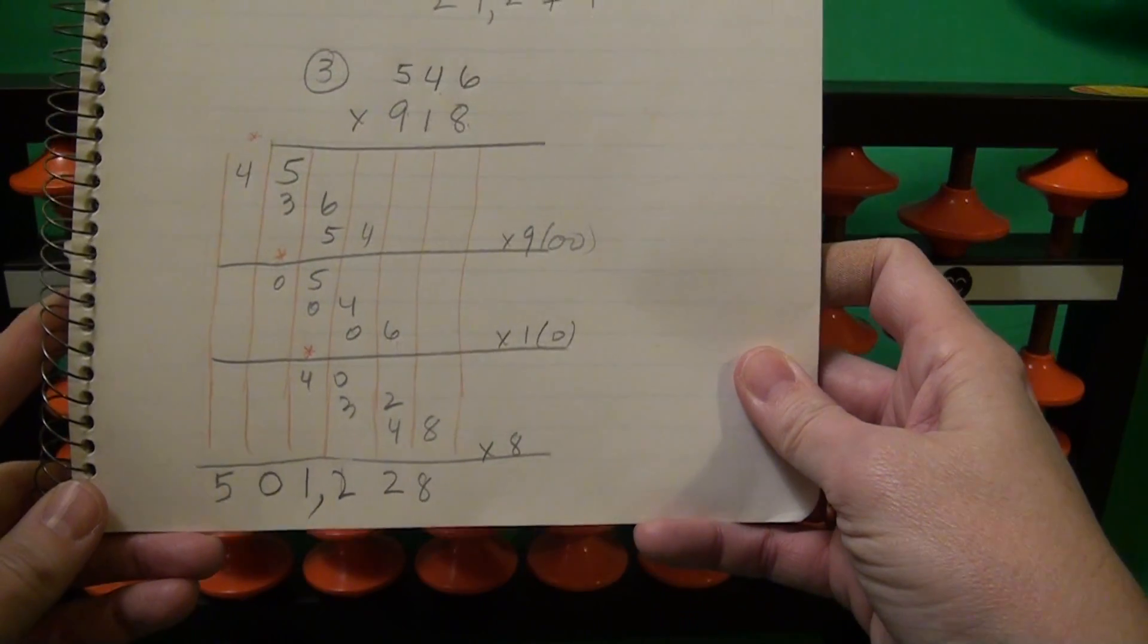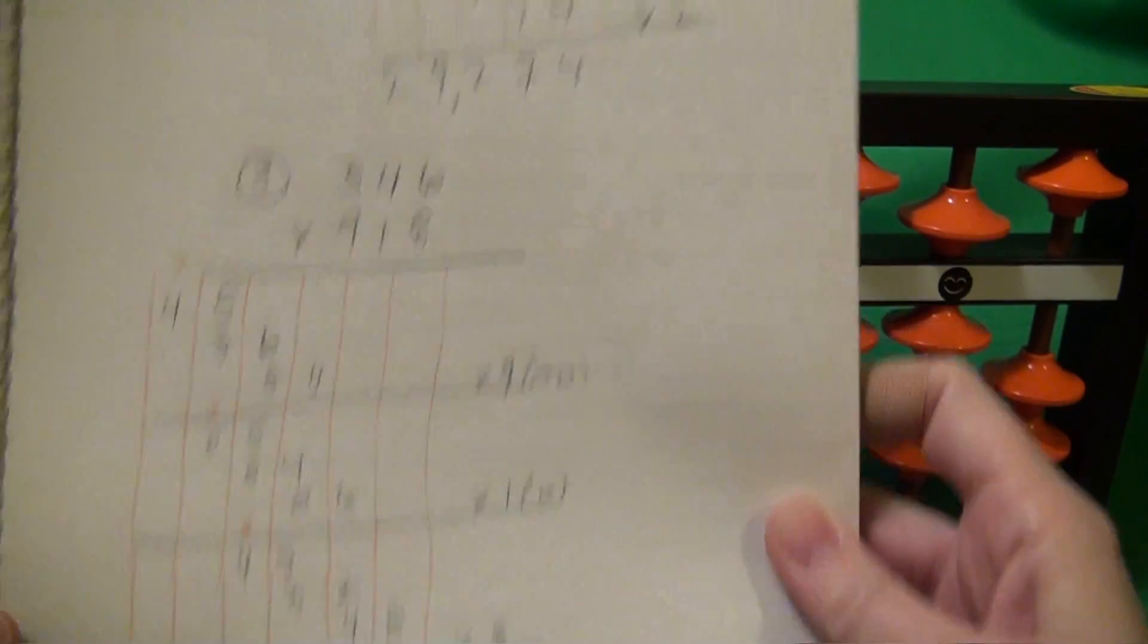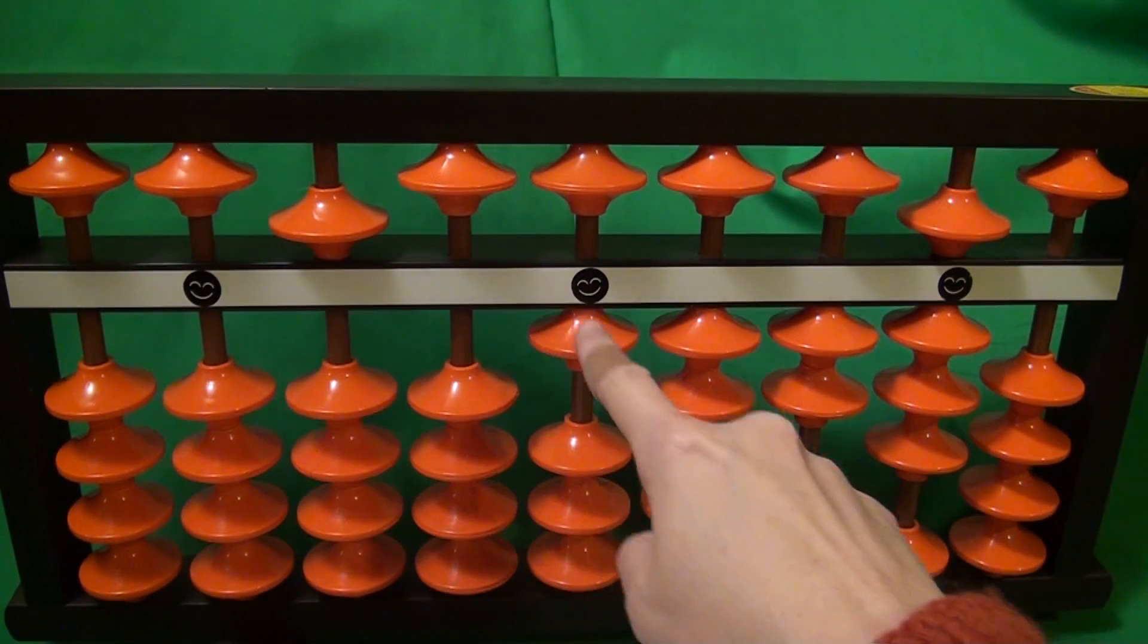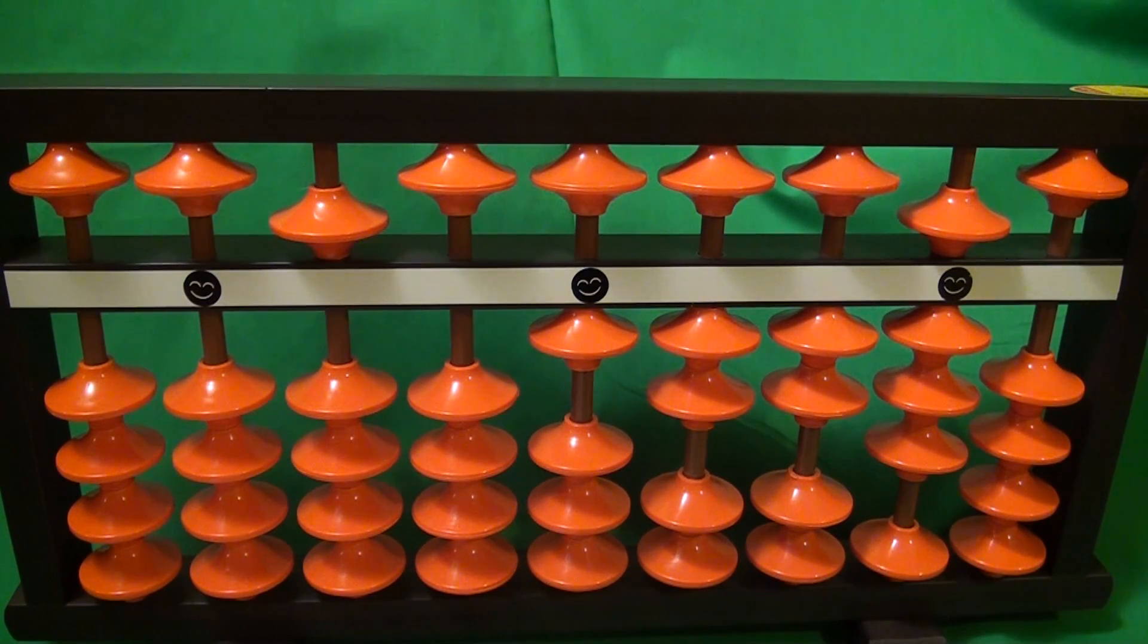Which is what we got. 501,228. And that is how you add using—or sorry, not add. That is how you multiply using the soroban.